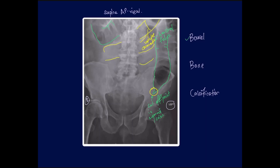For bone, look at Shenton's line — no fracture — and the iliopectineal line. There is no sclerotic or lytic lesion observed, so the bone quality is good. For calcification, there is no obvious ureteric stent, catheter, or calculus — no highly white opaque structures visible on the abdominal X-ray. So there is no calcification here. Basically, this is a small and large bowel dilation.